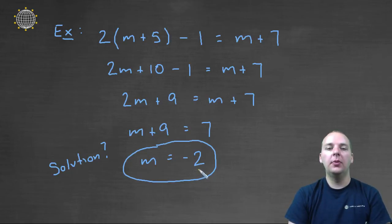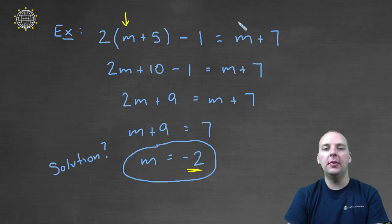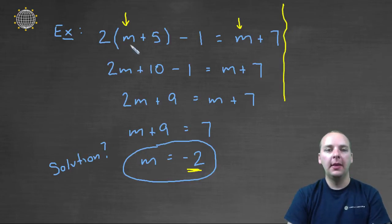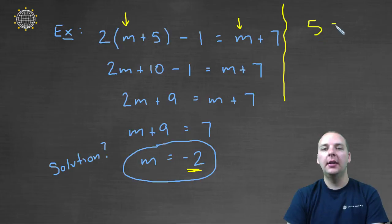What I can do is take negative 2 and plug it back in here for m, and we can verify our answer. Some of this we'll do in our head. Negative 2 plus 5 is 3, right? Then 3 times 2 makes 6, and 6 minus 1 makes 5.